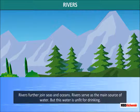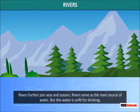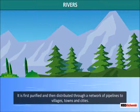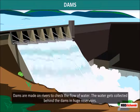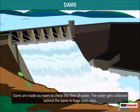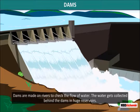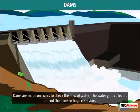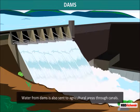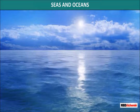Rivers serve as the main source of water. But this water is unfit for drinking. It is first purified and then distributed through a network of pipelines to villages, towns and cities. Dams are made on rivers to check the flow of water. The water gets collected behind the dams in huge reservoirs. Water from dams is also sent to agricultural areas through canals.